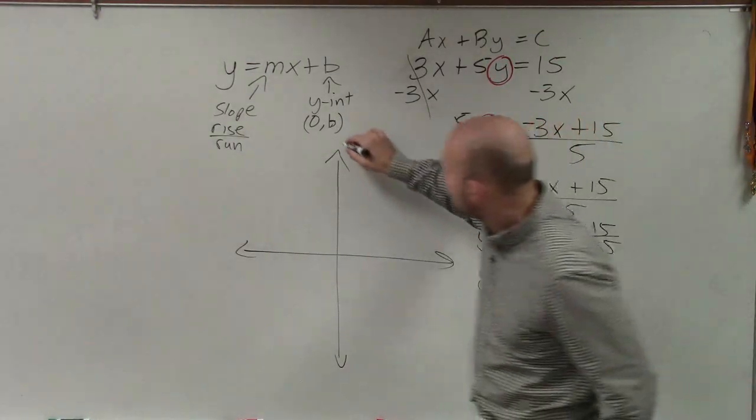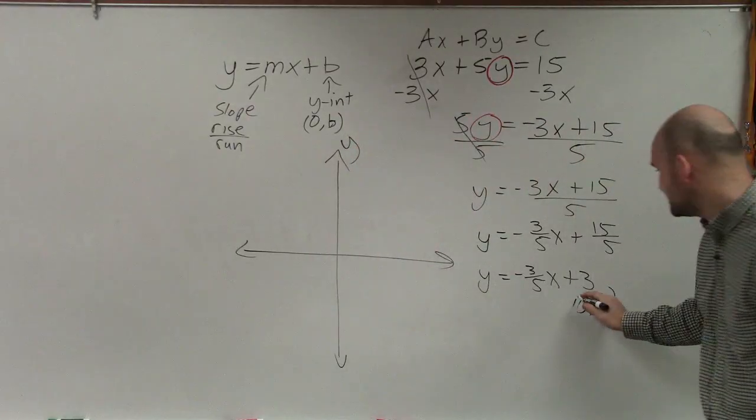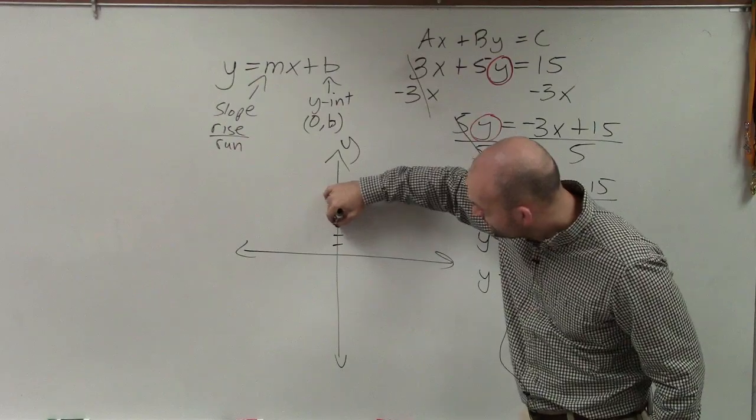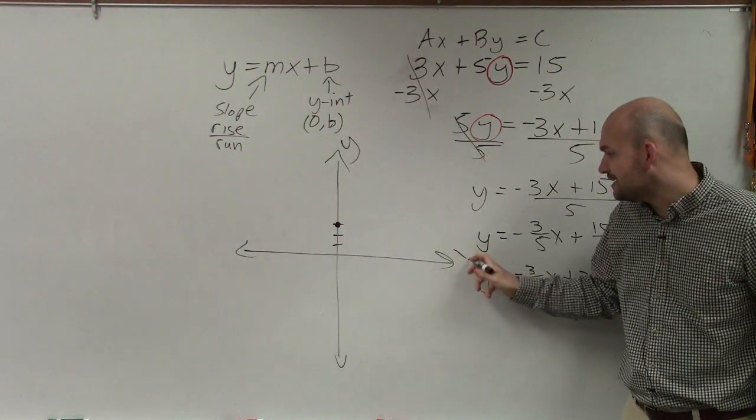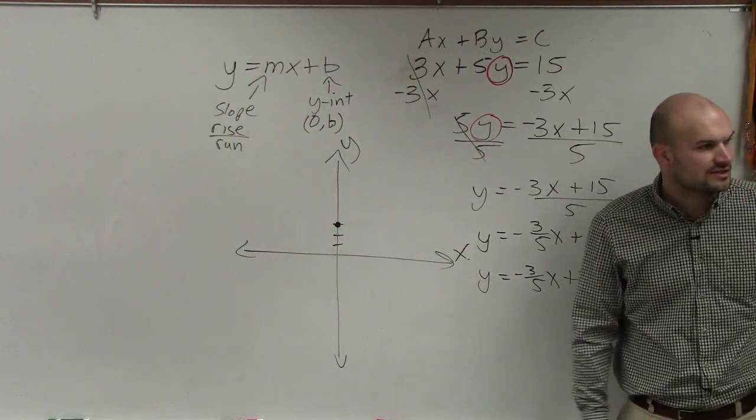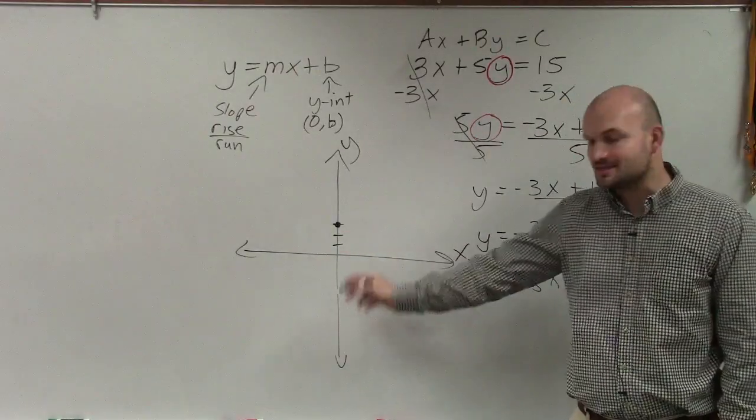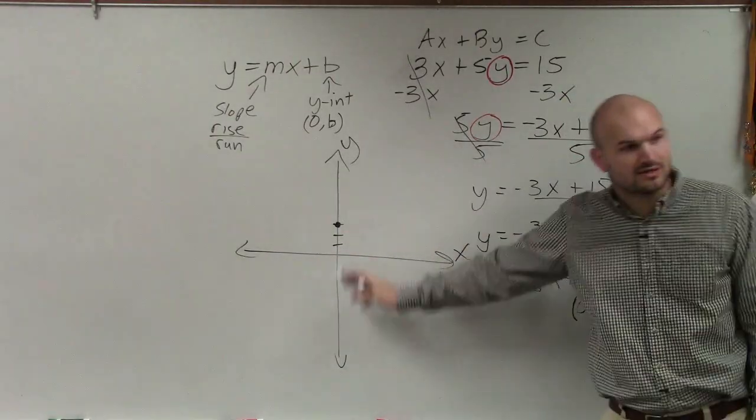Notice that the y-intercept goes on the y-axis. So I go up three units, 1, 2, 3, and make a nice big dot. The y-intercept does not go on the x-axis. I still saw a couple of those mistakes last class period. That's the x-axis. This is the y-axis. Y-intercept is where the graph crosses the y-axis.